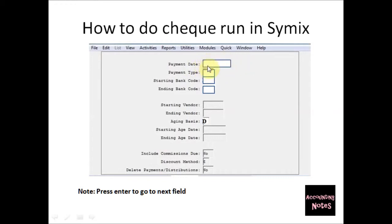Next it says Payment Type — you would leave this defaulted to SMW, which means you want to include everything in the check run. Next is the Starting Bank Code, which means you need to enter the bank code you want to run the checks from.